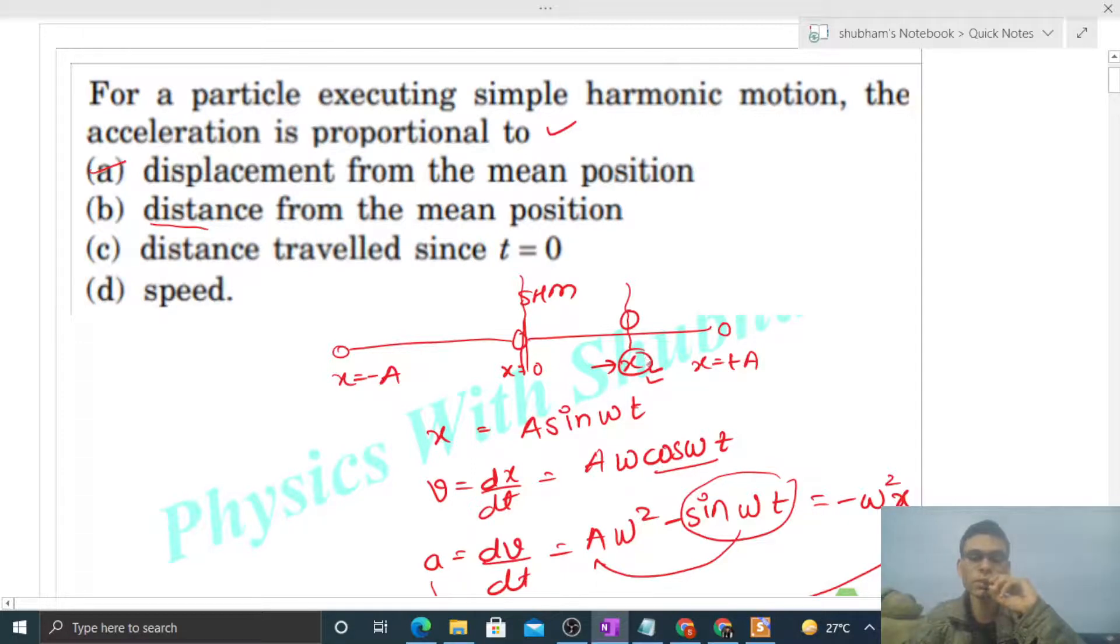Let's say the particle first went to the extreme position, then came back and is now at this x coordinate. At that time, the distance will be first it went to capital A, and then it returned, so the distance will be A minus x. So distance traveled is 2A minus x.